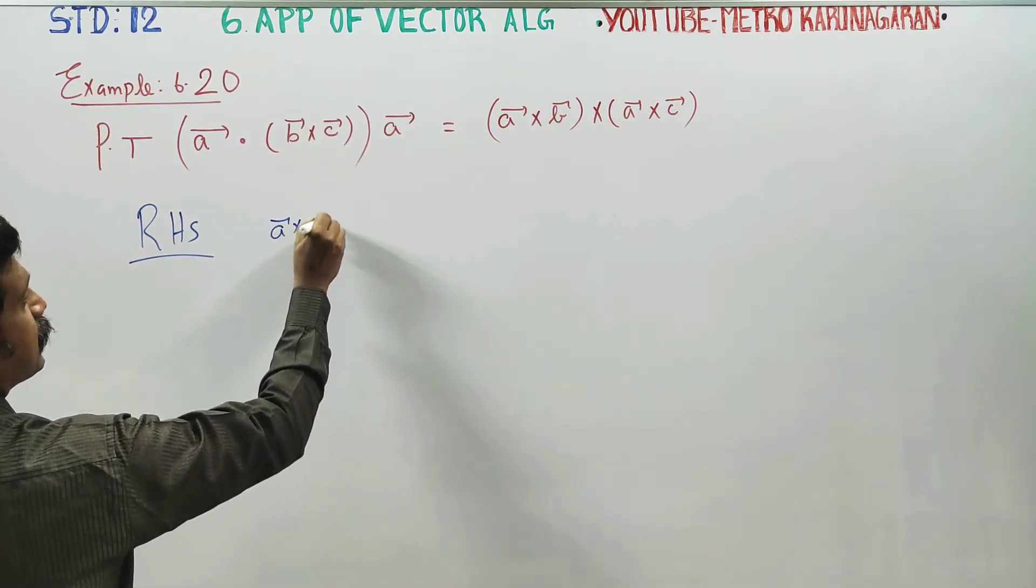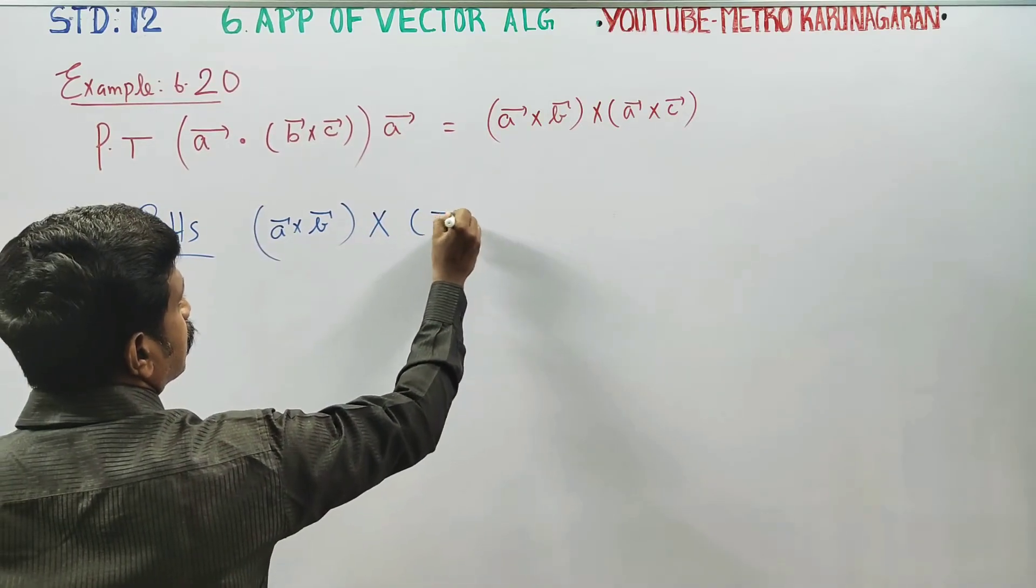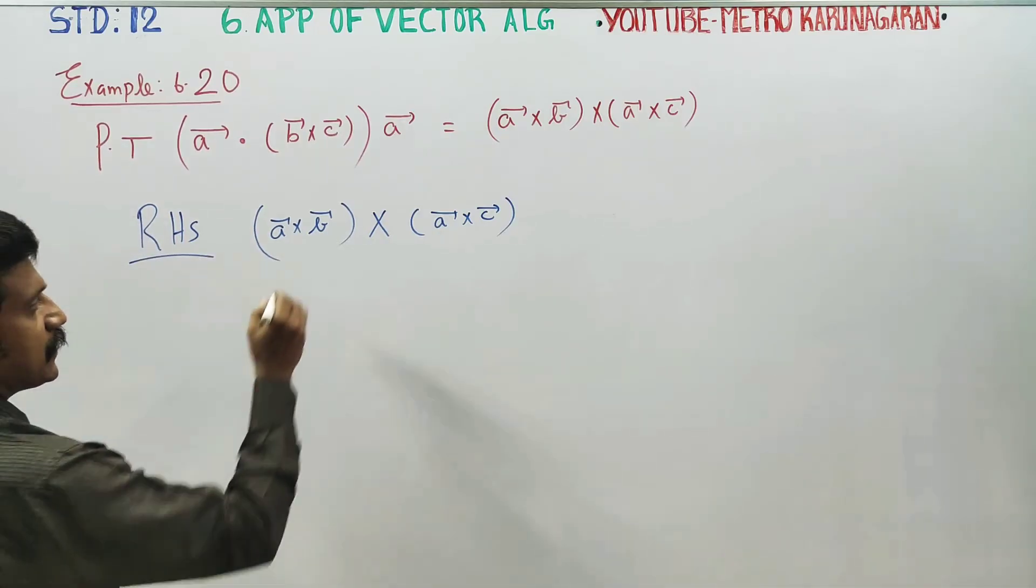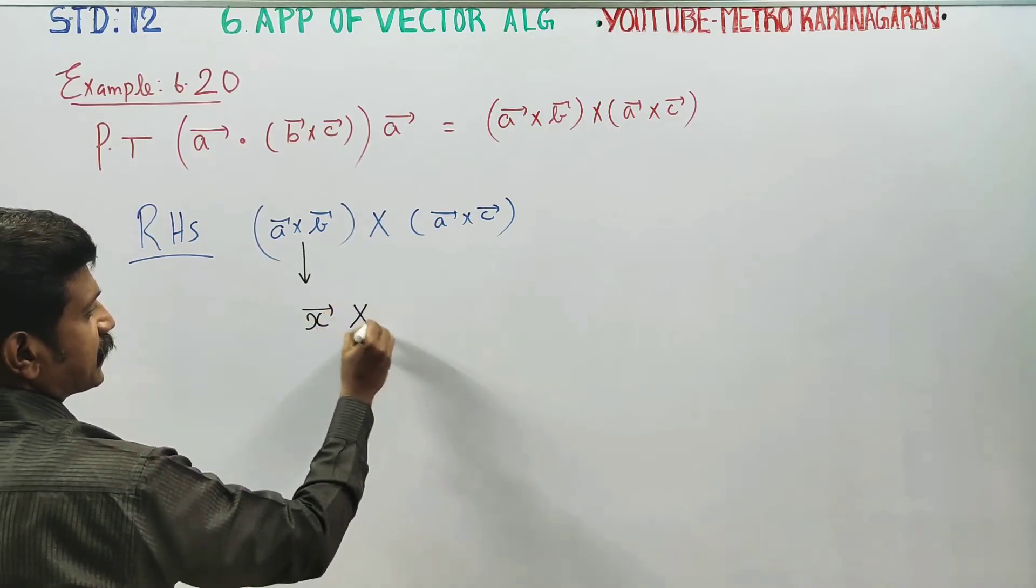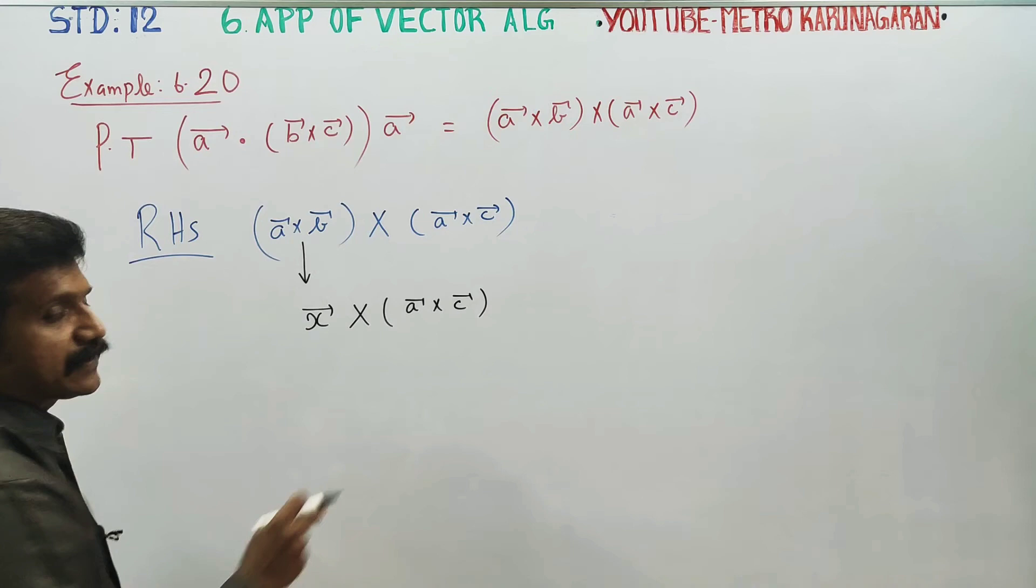A cross B cross A cross C. Now, what do I say? This will be X. X vector is X vector dot A cross C. If you want to know, this will be vector triple product.